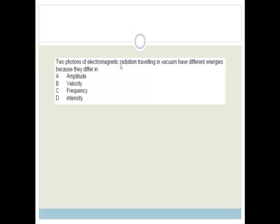It says two photons of electromagnetic radiation traveling in a vacuum have different energies because they differ in... What you need to know is that E is equal to HF. This is the energy of the radiation, light or whatever. H is Planck's constant, so that remains the same. And this here is your frequency, measured in hertz. The correct answer is frequency, because your energy is dependent on your frequency, and we can see that from this equation.